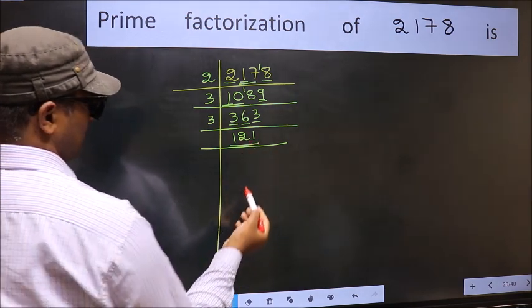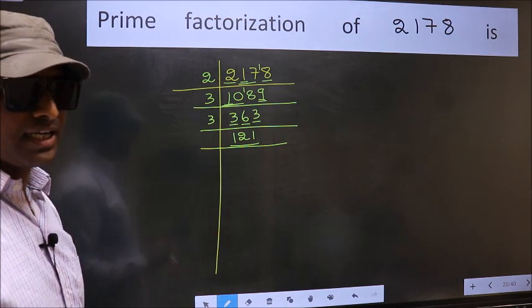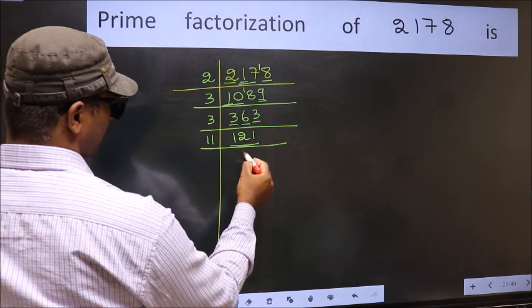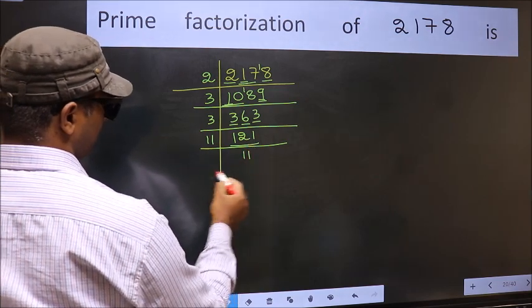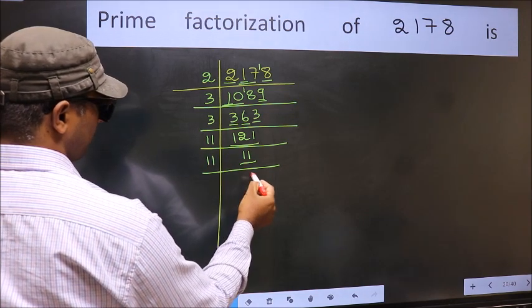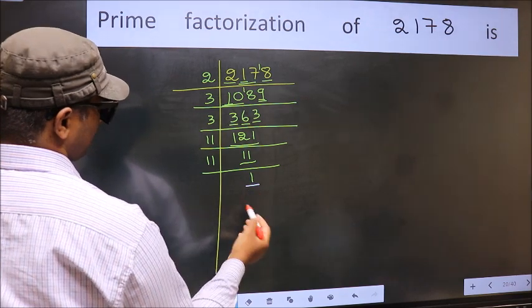Now, here we have 121. Always remember, 11 into 11, 121. That is, 11 times 11 is 121. Now, here we have 11. 11 is a prime number. So, 11 once 11. So, we got 1 here.